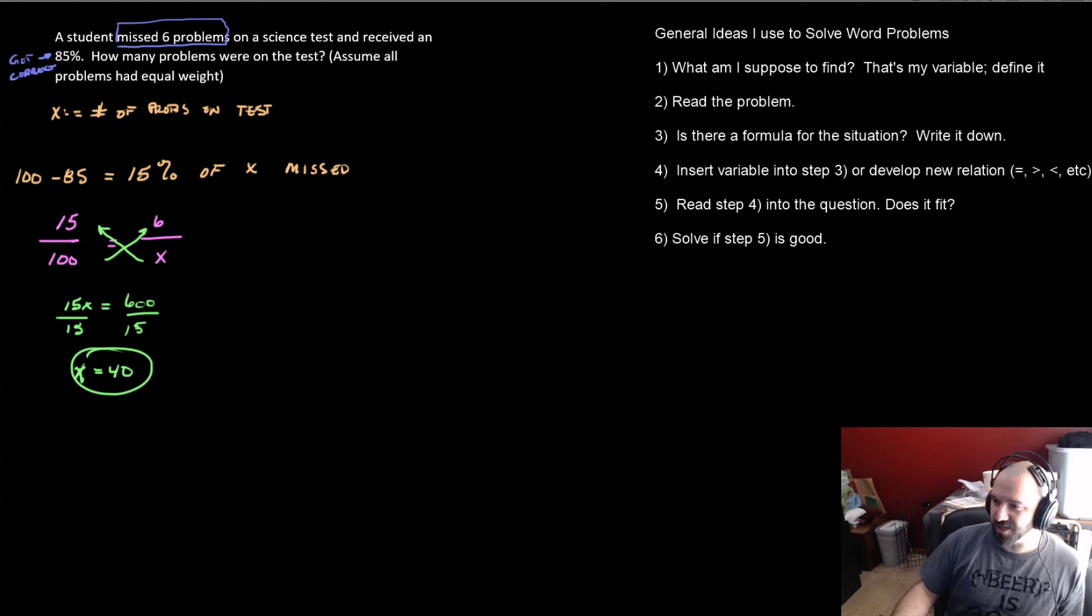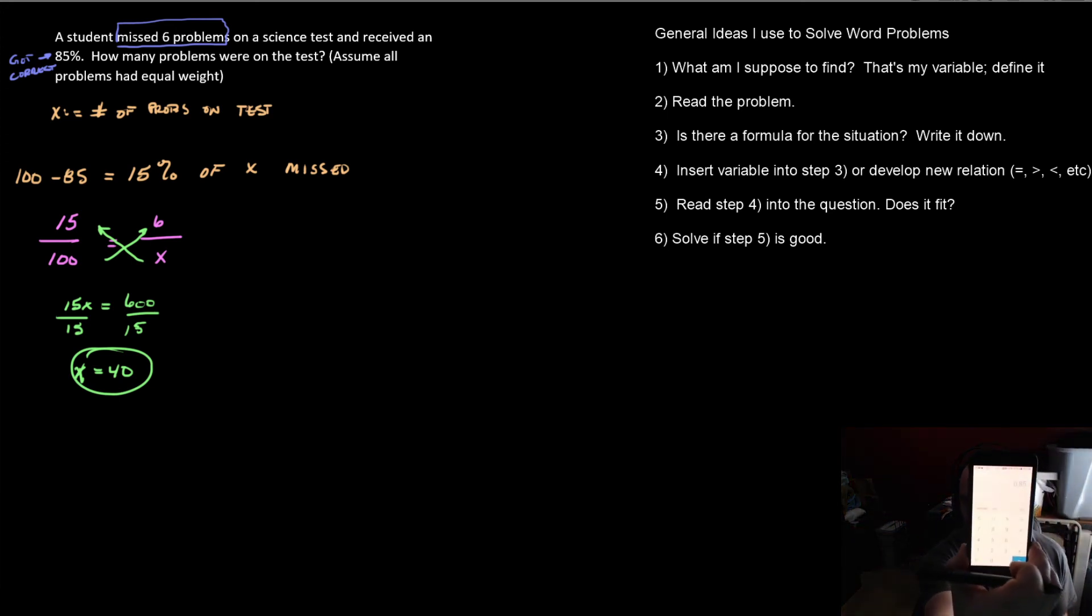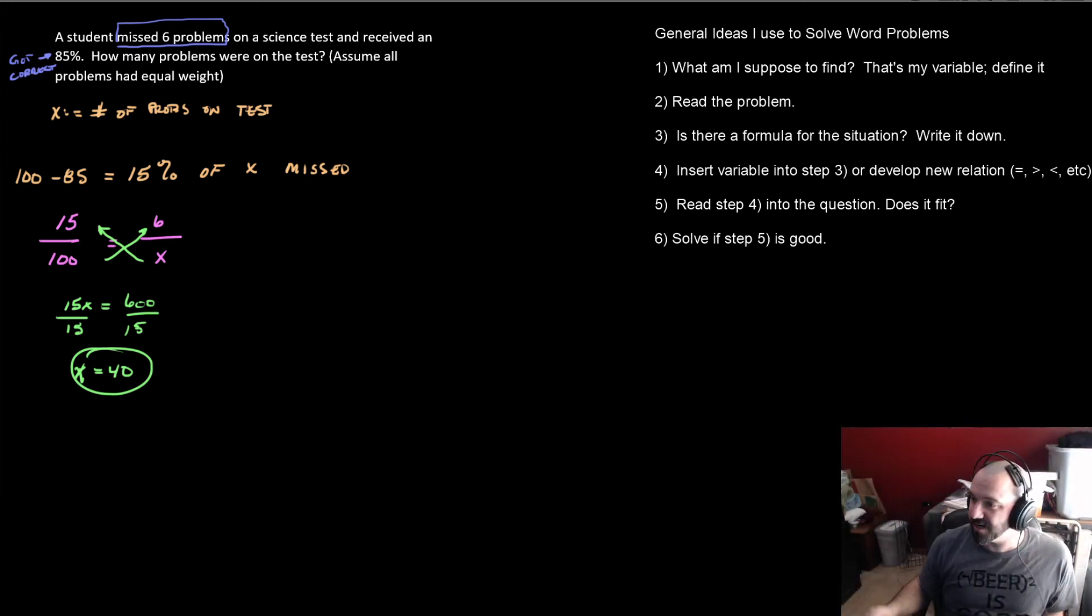So I can go back and check the 40, but the 40 is not going to make any sense unless I go back and say, okay, I missed six problems. So 40 minus six is 34. So I got 34 out of 40, divided by 40. Is that in fact 85%? And if you can read that, probably not. But anyway, if you could read that, it does actually turn out to be 85%.